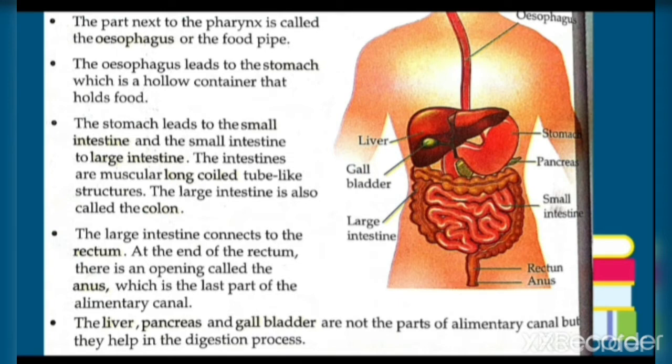The stomach leads to the small intestine, and the small intestine leads to the large intestine. The intestines are muscular, long, coiled tube-like structures. The large intestine is also called the colon.